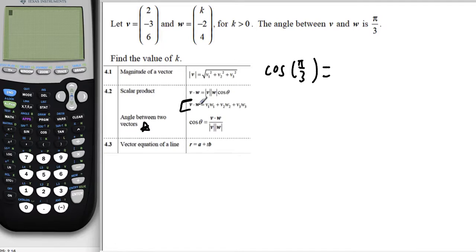The dot product v dot w is the i component of v times the i component of w, plus the j component of v times the j component of w, plus the k component of v times the k component of w. So that numerator would look like i times i, so 2 times k, which is 2k, plus j times j, so negative 3 times negative 2 is positive 6, plus k times k, 6 times 4, which is 24. So there's our numerator.